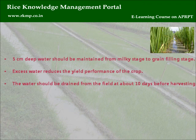Lesson 2: Water management. Improper water management reduces the yield performance of the crop. The water should be drained from the field at about 10 days before harvesting.